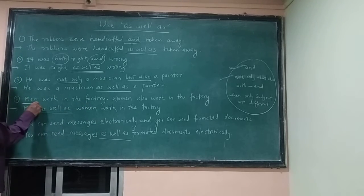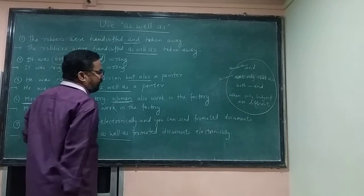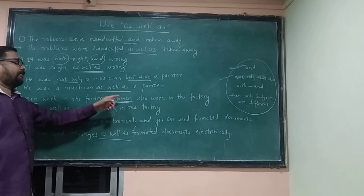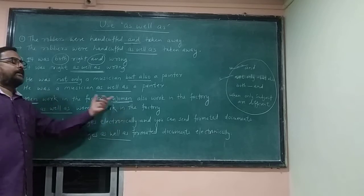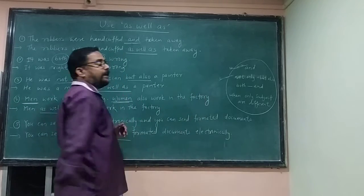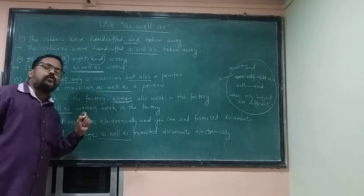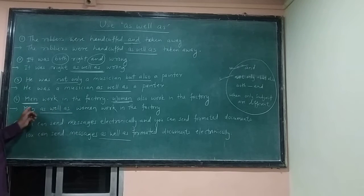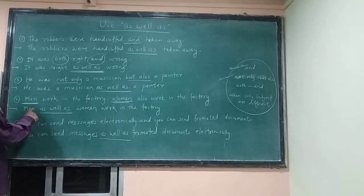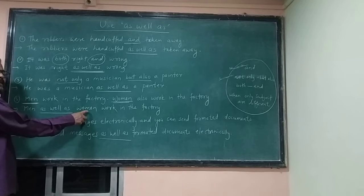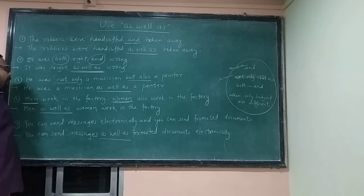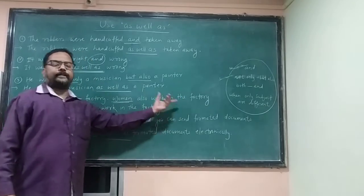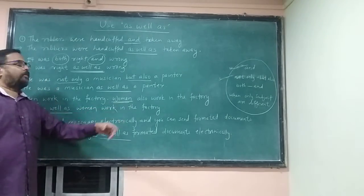Consider two sentences: 'Men work in the factory' and 'Women work in the factory.' The subjects are different — here it is 'men', here it is 'women' — but the other part of the sentence is the same. That's why we use 'as well as' between the two subjects. Write 'men as well as women' and then write the equal part: 'work in the factory.' So the sentence is: 'Men as well as women work in the factory.'